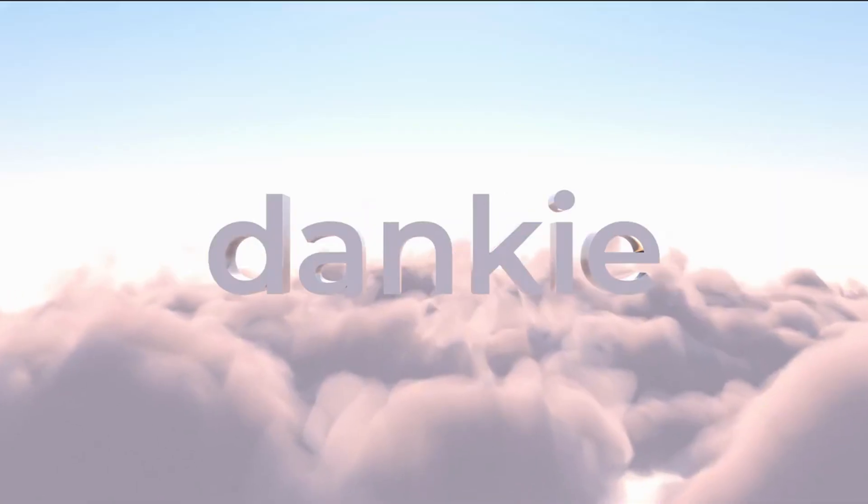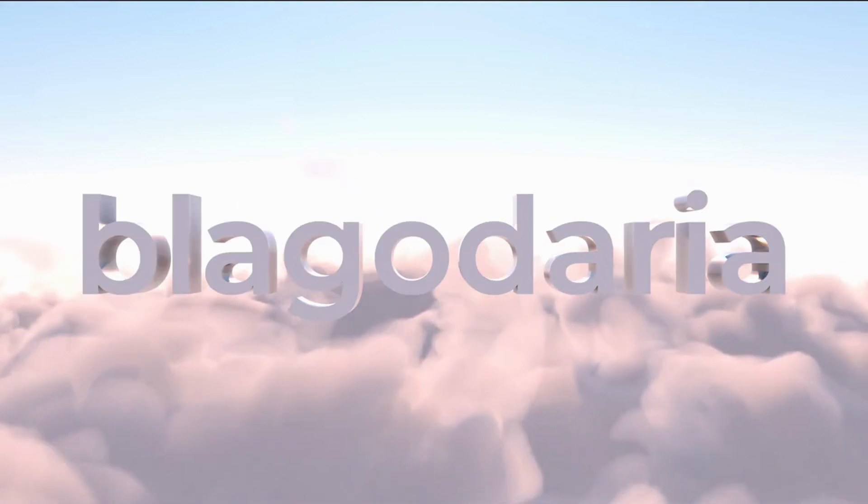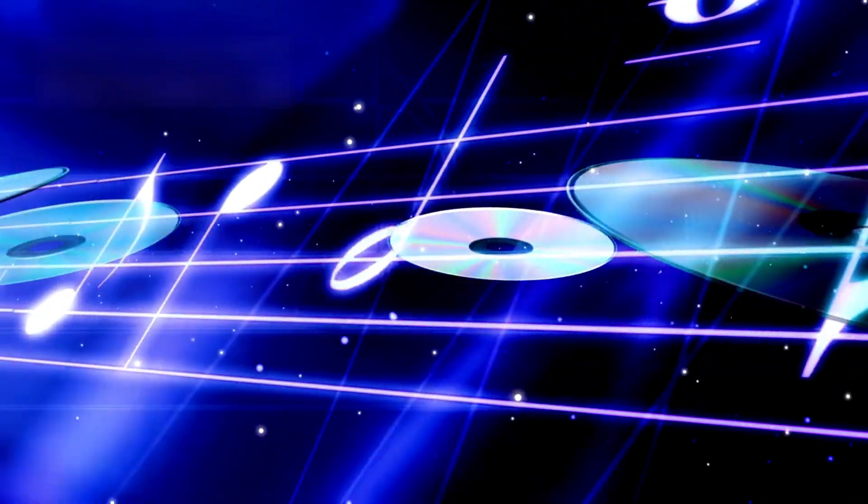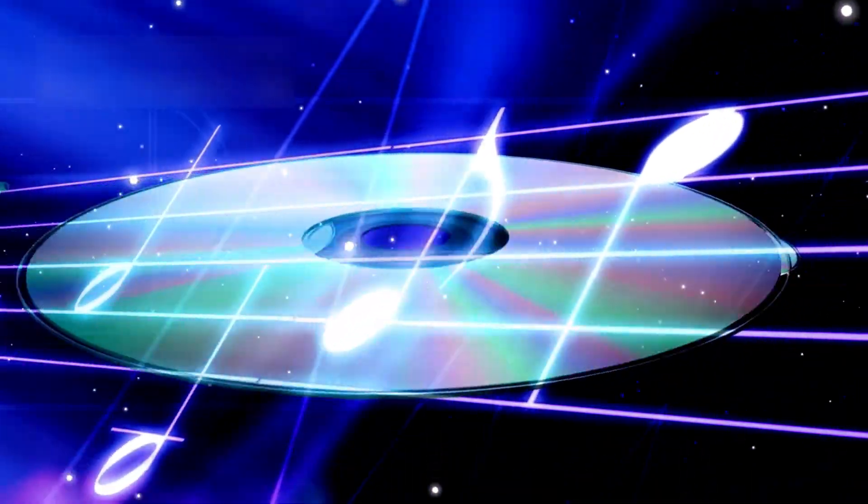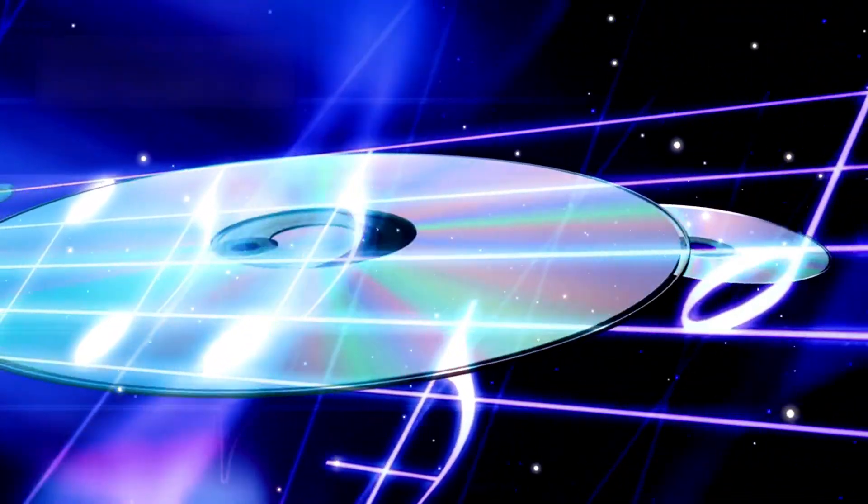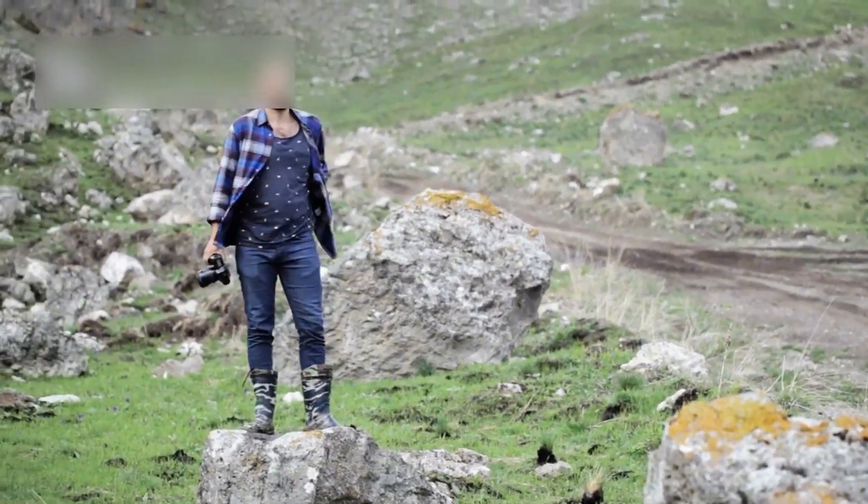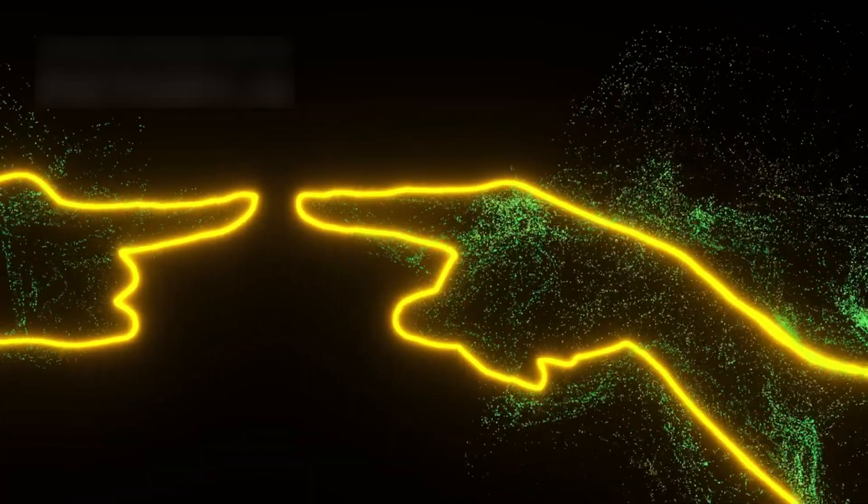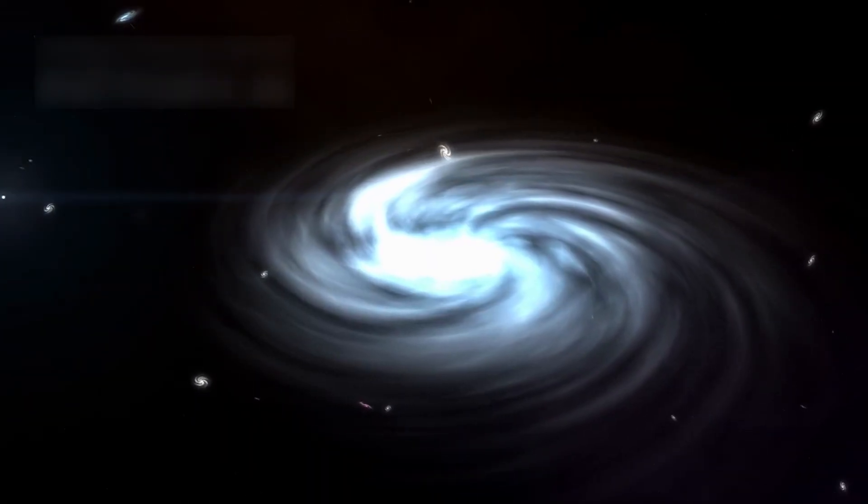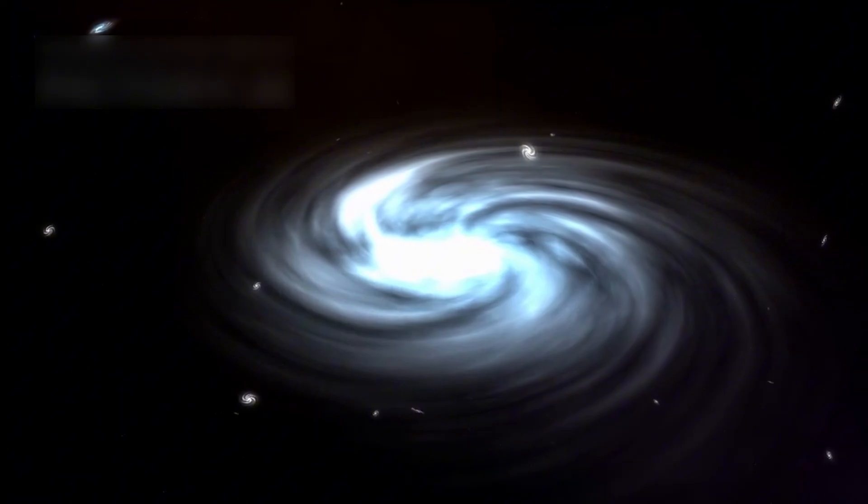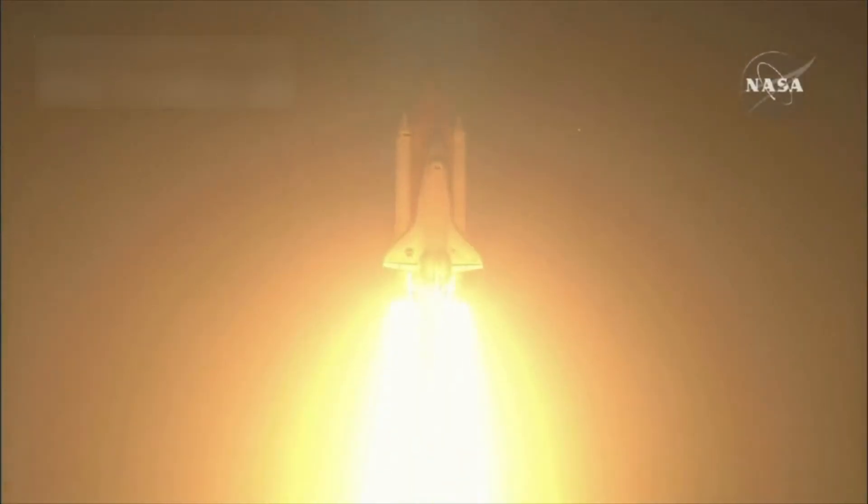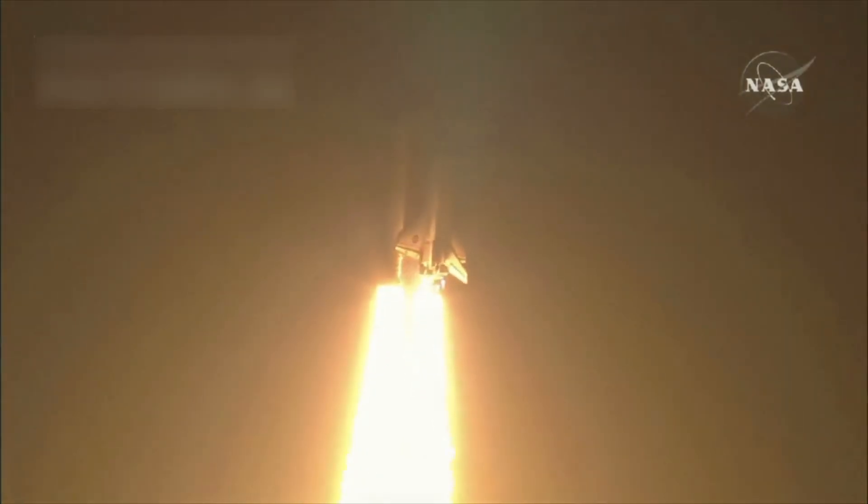The golden record is still floating out there with messages in 55 languages. There are songs, greetings, sounds of nature, and even a baby's first cry. Images show daily life, wildlife, and human technology on Earth. It's the most distant time capsule ever launched by human hands. This golden disk was the brainchild of Carl Sagan and his team. It reflects hope, unity, and curiosity about our place in the stars. They dreamed that someone or something might find it one day and say hello.